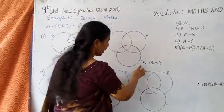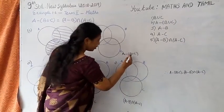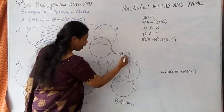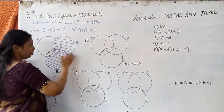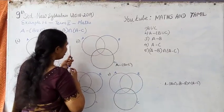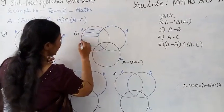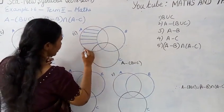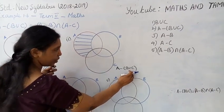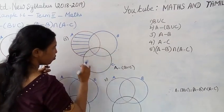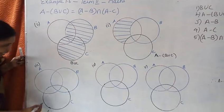Then second one is A difference B union C. After B union C, leaving these two full moons. The remaining A portion. The remaining A difference B union C. B union C means leave the two full moons B and C and shade the remaining part of A.